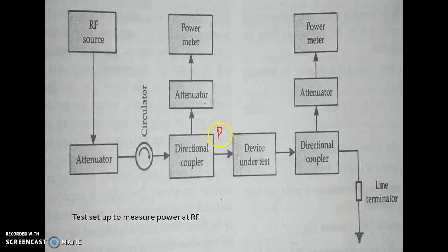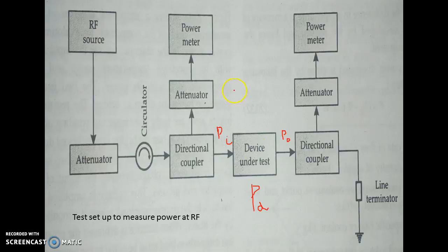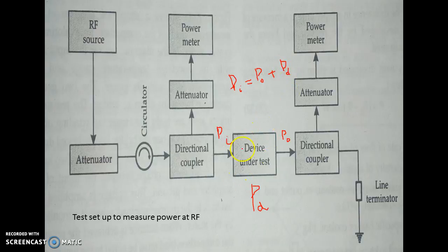Pi is the input power to the device. The device is going to dissipate some power, called Pd, and there is also output power P0. Based on the power absorbed, we make a measurement. We can write: Pi = P0 + Pd, so you can find out the power absorbed by the device.